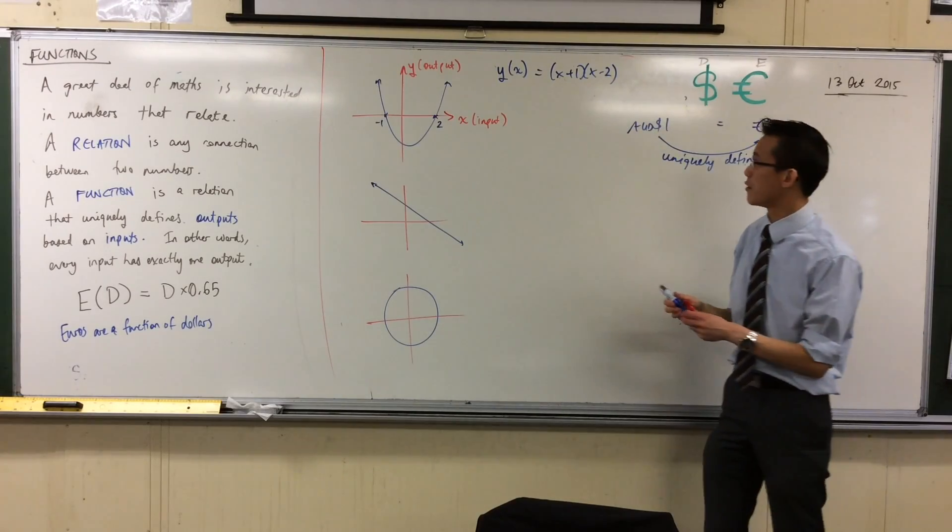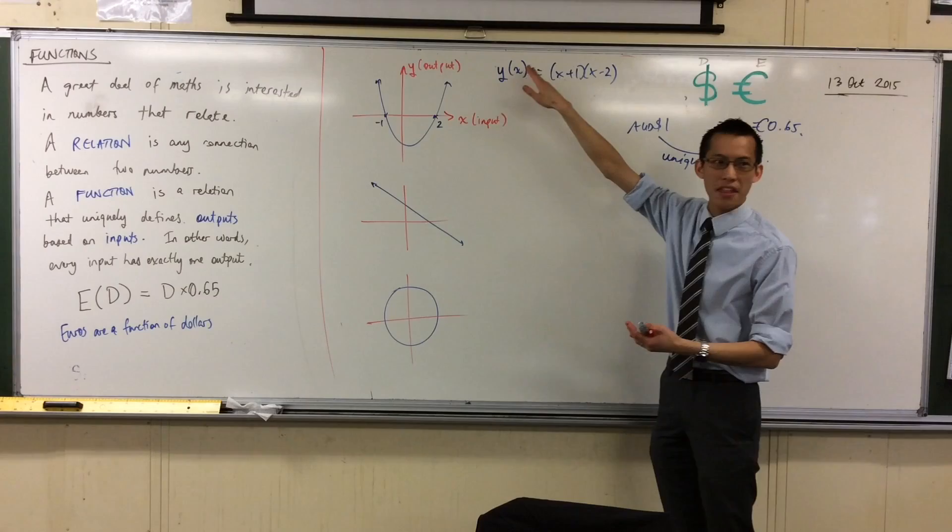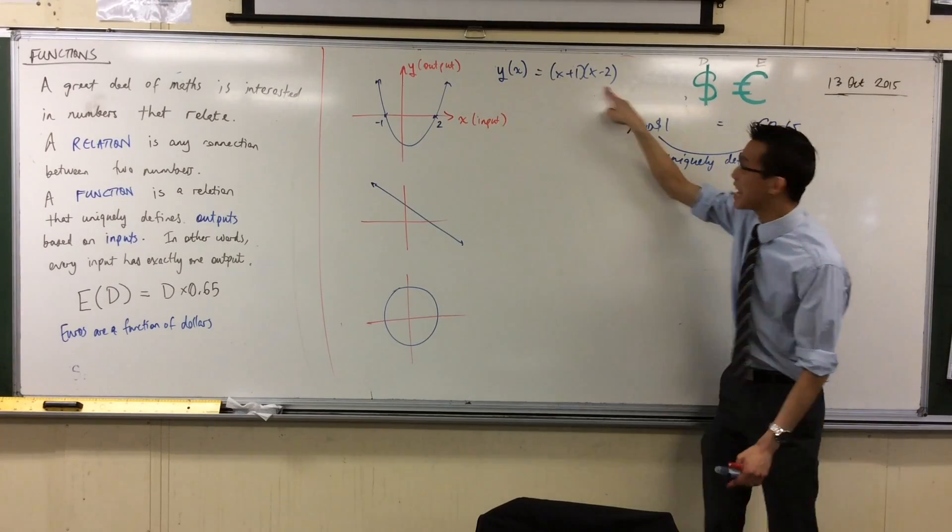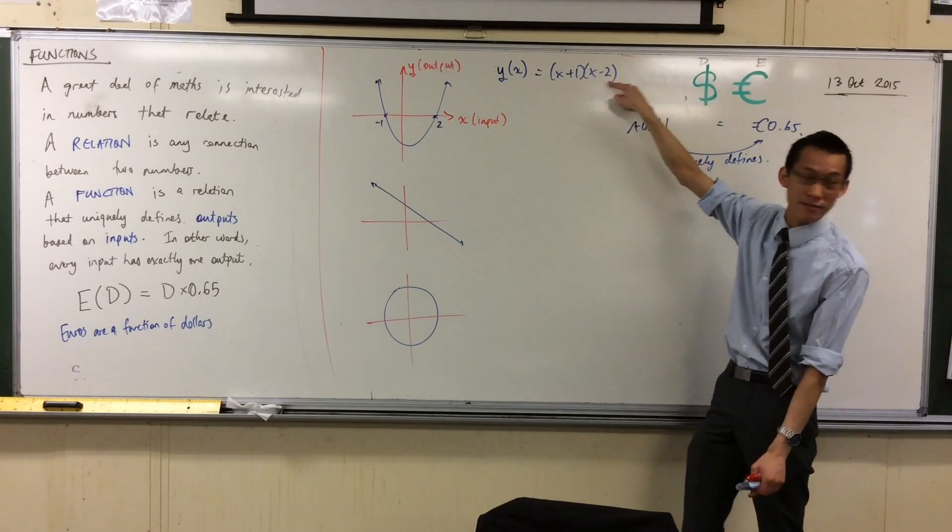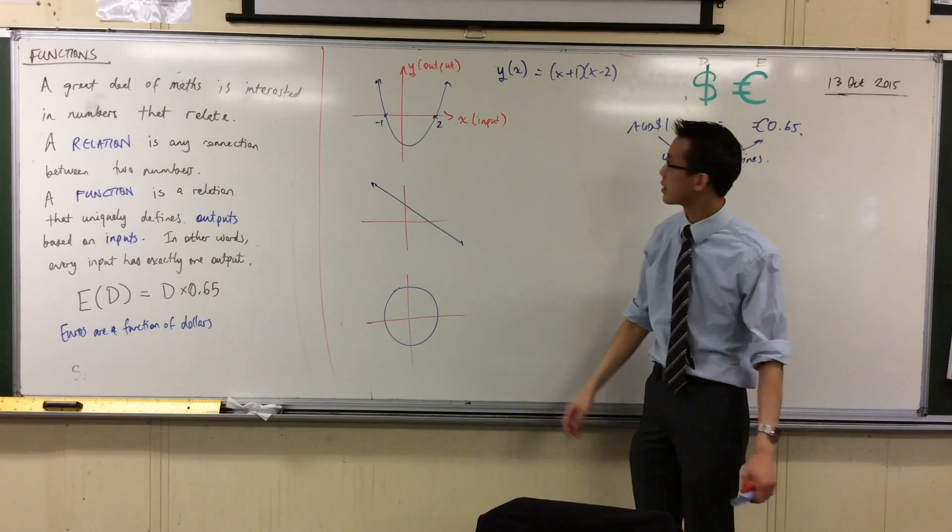So what does this notation mean, right? y isn't just another number. It's the name of a function that has x's in it. So this is my function, and my name for it is y. That's the label I'm putting on it.